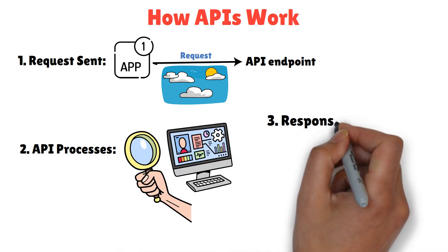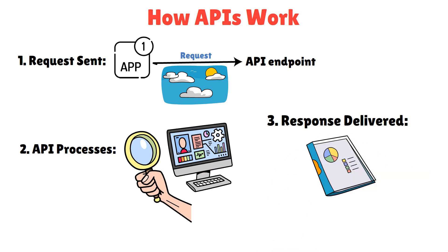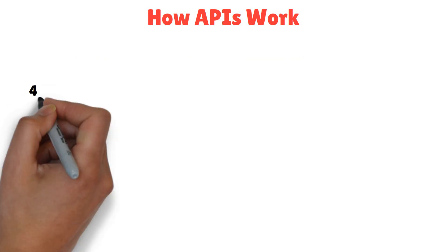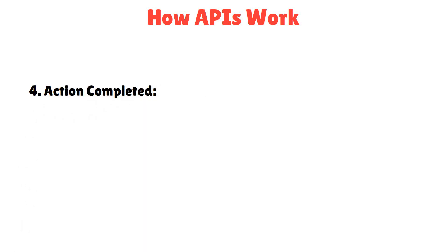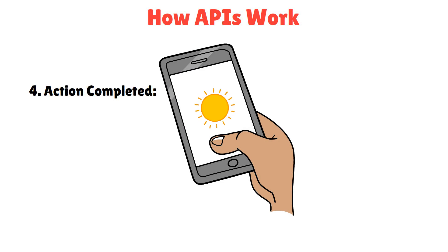3. Response delivered. The API sends the answer back to your app in a tidy format. 4. Action completed. Your app uses the response like showing it's sunny on your screen.